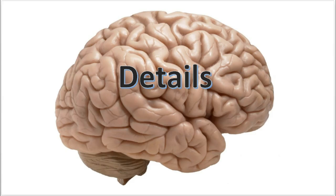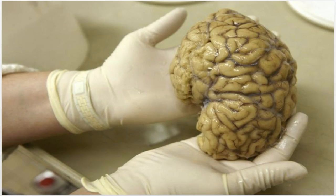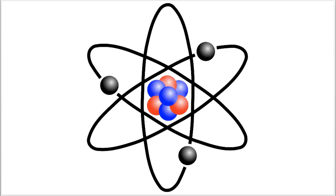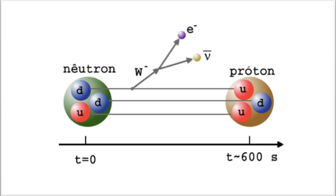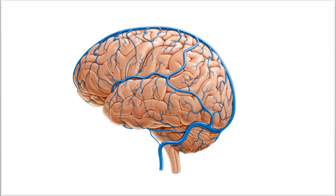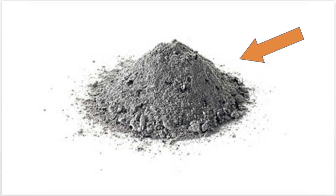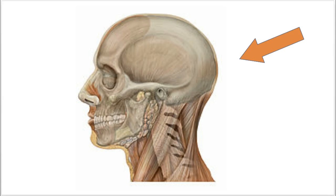Brain states are details about your physical brain: gray matter, chemicals, C-fibers, atoms, neurons, veins, etc. You can think of brain states as the physical stuff that is contained in your skull.